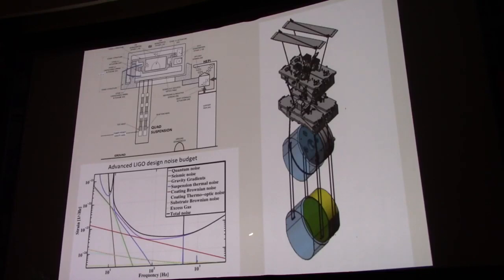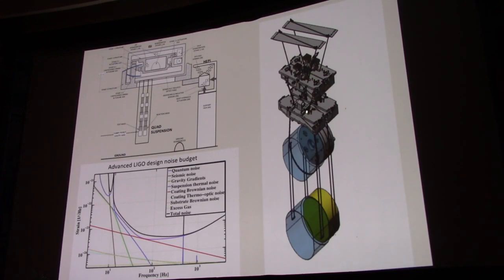Advanced LIGO has some very fancy things in it. The mirrors are suspended — the earth connects to springs up here, and each suspended mirror is a pendulum, then another pendulum, another pendulum, another pendulum. You can go home and build this for yourself.